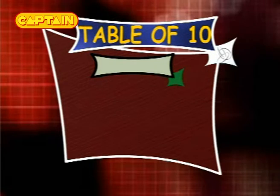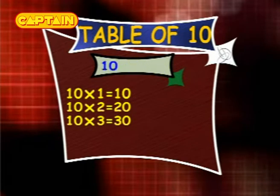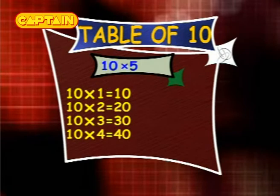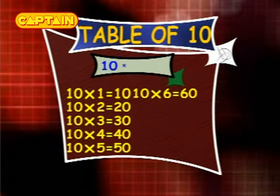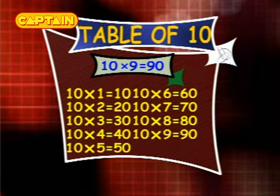Table of 10. 10×1 is 10. 10×2 is 20. 10×3 is 30. 10×4 is 40. 10×5 is 50. 10×6 is 60. 10×7 is 70. 10×8 is 80. 10×9 is 90. 10×10 is 100.